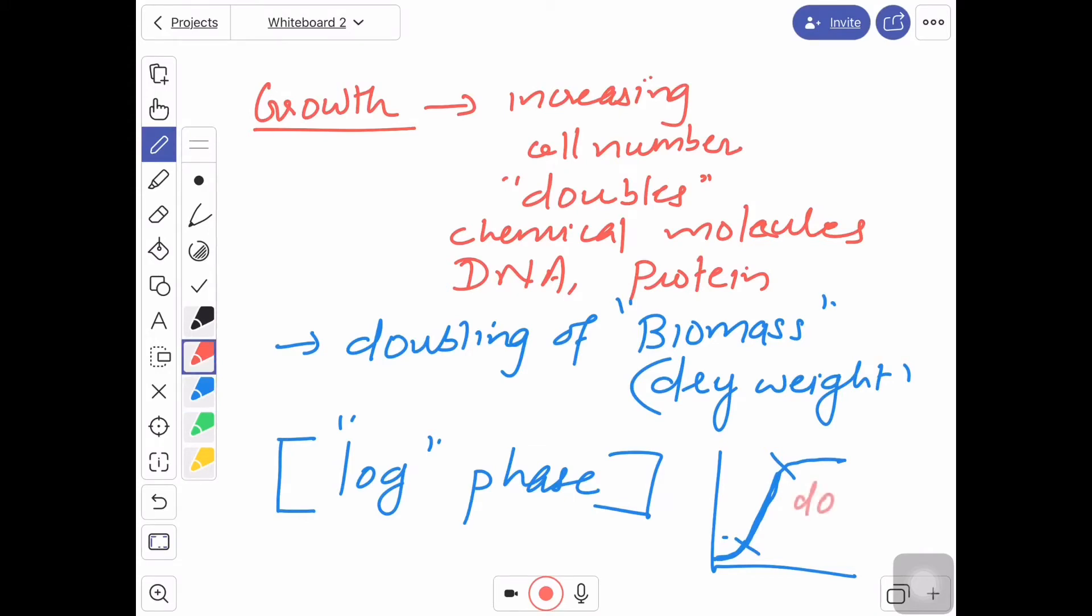Why during this exponential phase? During this exponential phase, cells get doubled. So we can say that td, that is doubling time, is the time taken by the cell culture to double its number of cells.